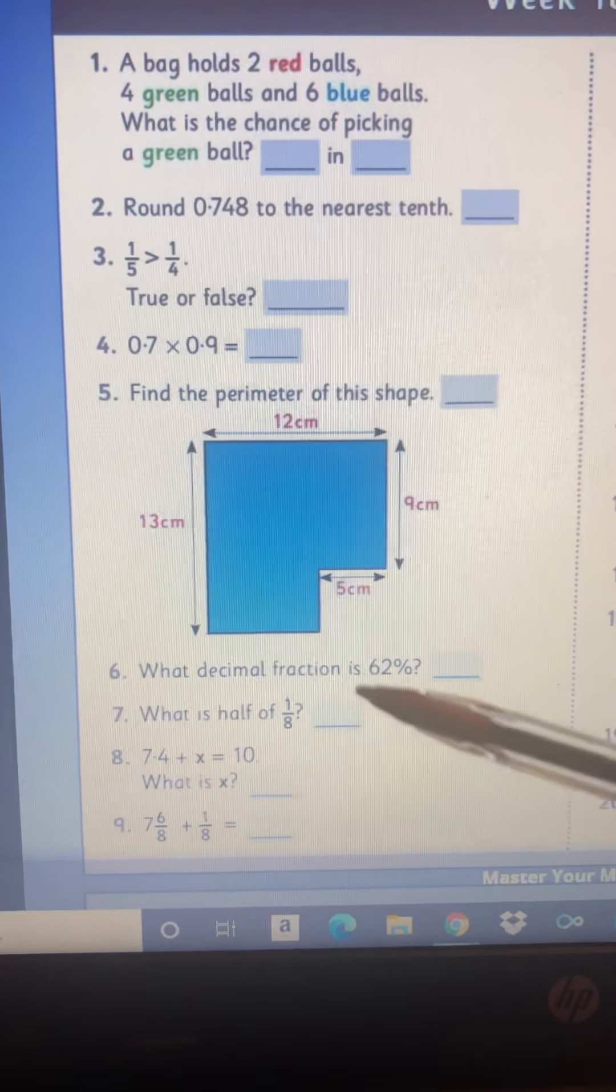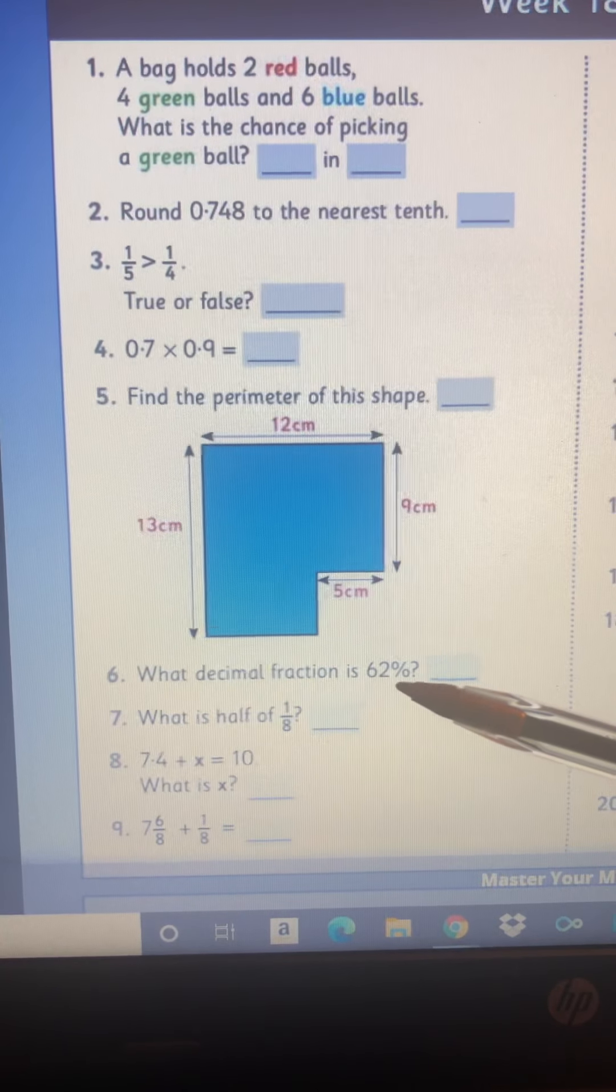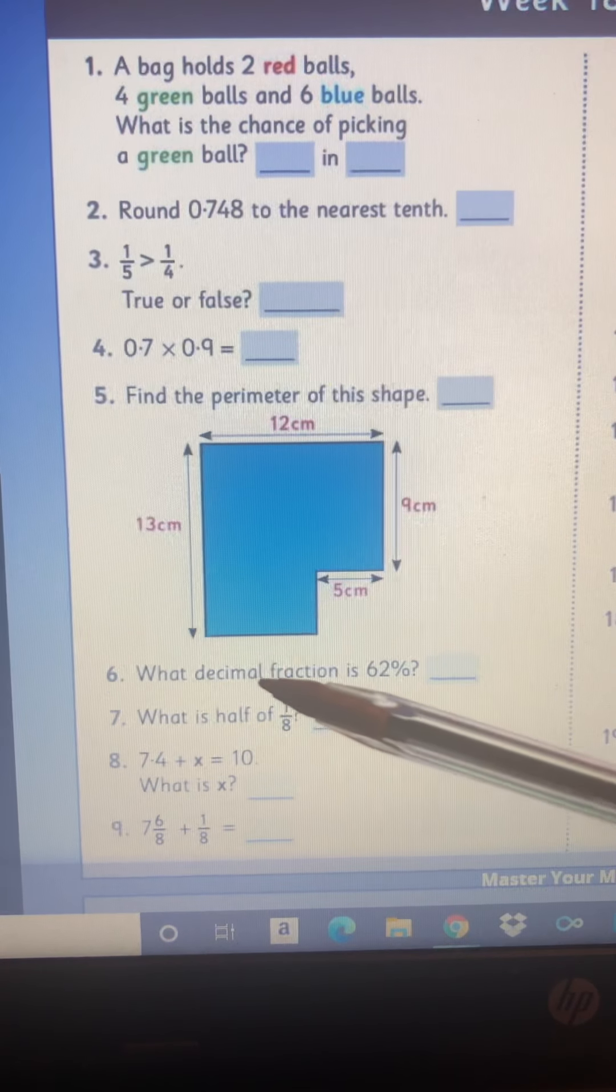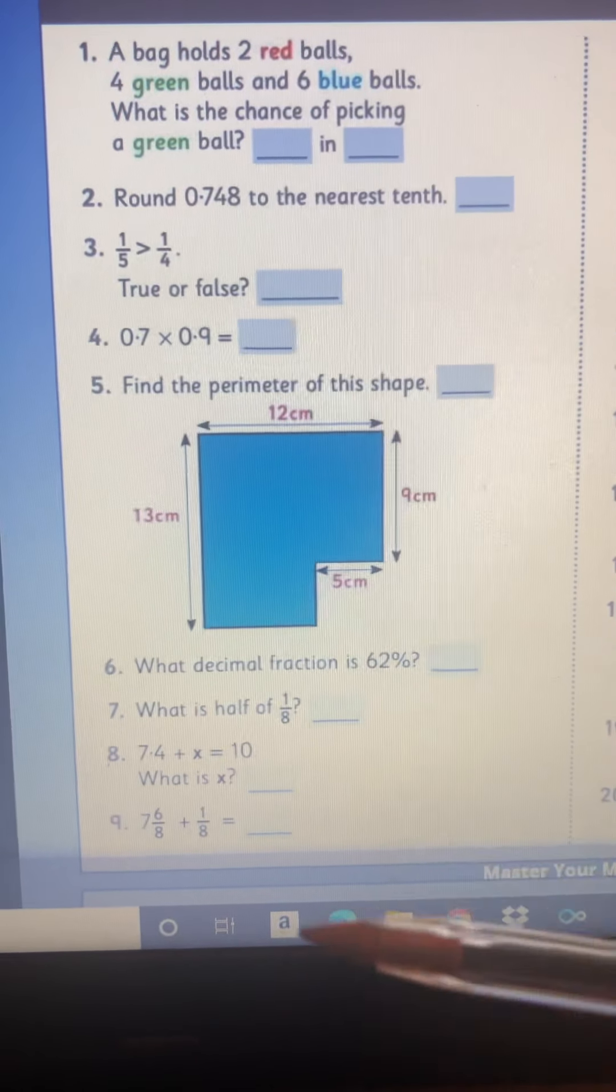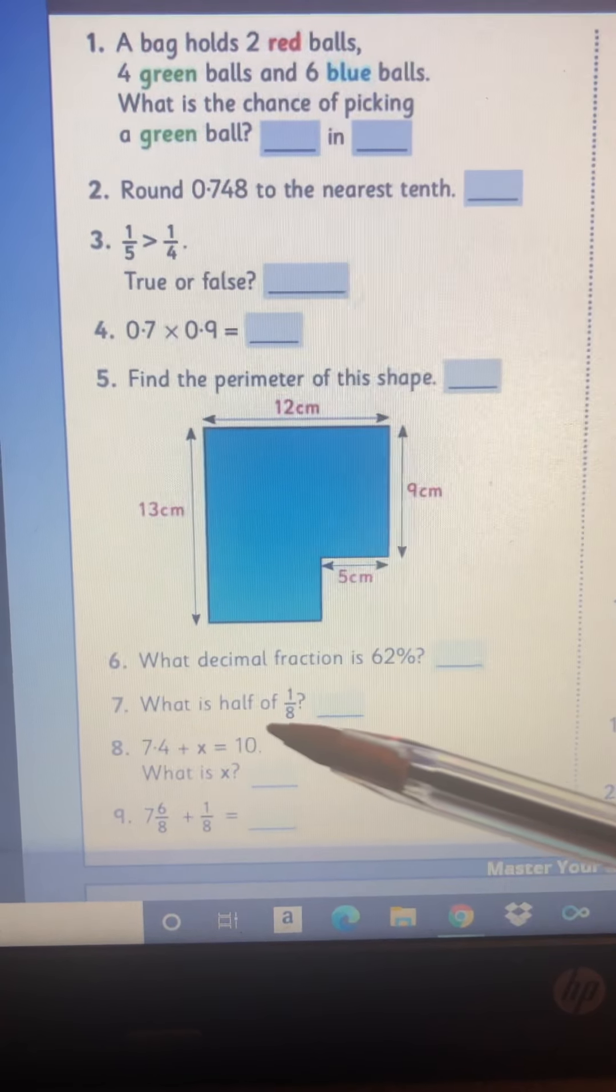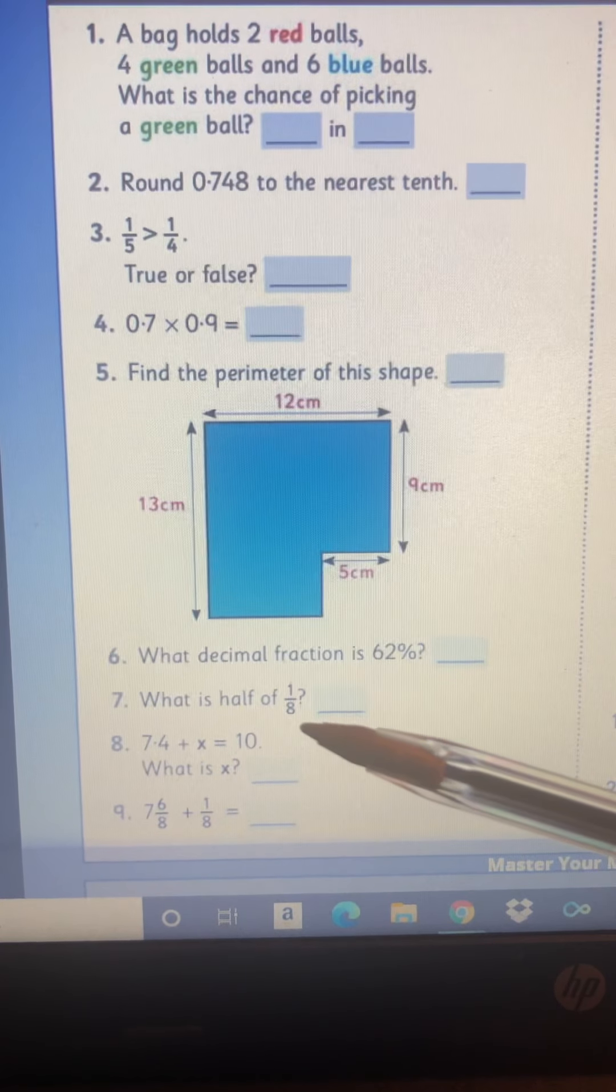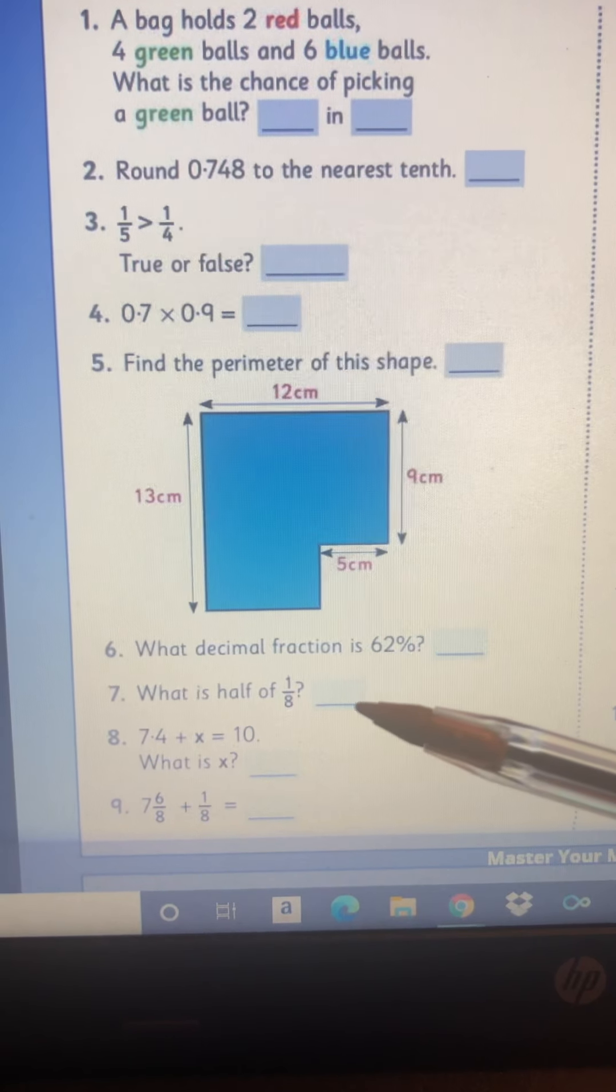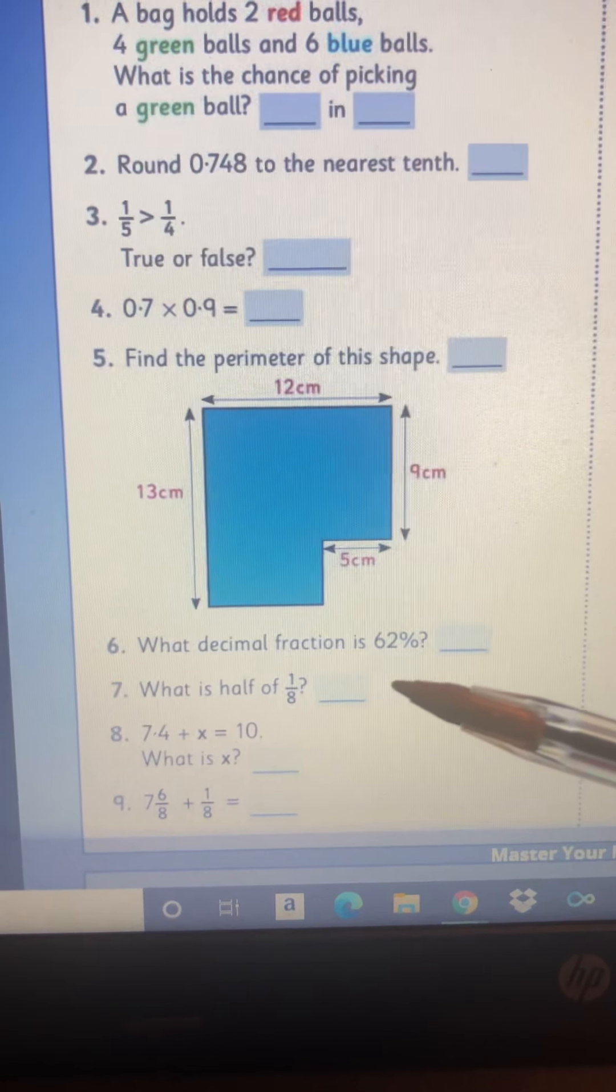Number six, what decimal fraction is 62%? So all you're doing is changing 62% into a decimal. Number seven, what is half of one eighth? So you know of is the same as multiply. So one half multiply by one eighth.